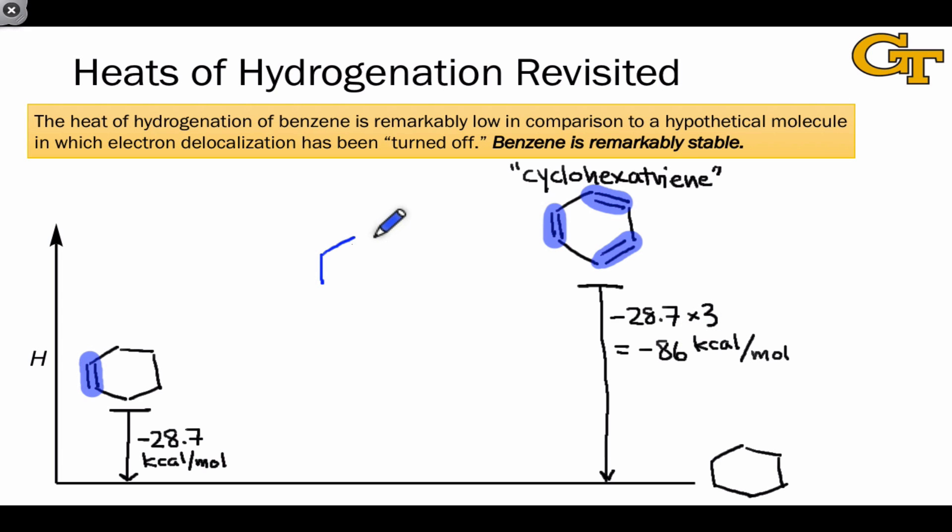Due solely to conjugation, we should expect that the enthalpy of hydrogenation of benzene is going to be considerably lower than our hypothetical cyclohexatriene. But exactly how much? Well, think back to our first look at resonance stabilization energy in the last lesson. The difference wasn't huge. It was something like three to six kcal/mol for a conjugated system relative to a comparable system without conjugation.